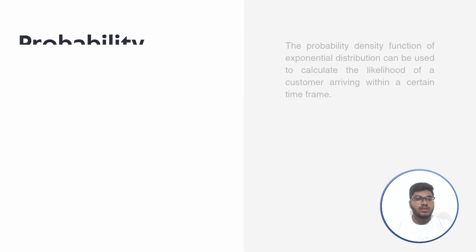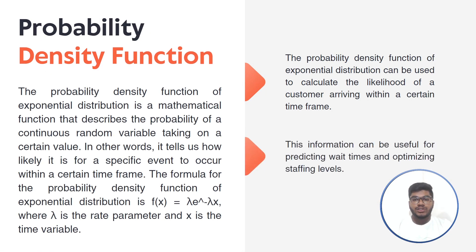The probability density function of the exponential distribution is a mathematical function that describes the probability of a continuous random variable taking on a certain value. In other words, it tells us how likely it is for a specific event to occur within a certain time frame. The formula for the PDF is: f(x, lambda) = lambda * e^(−lambda*x), where lambda is the rate parameter and x is the time variable.